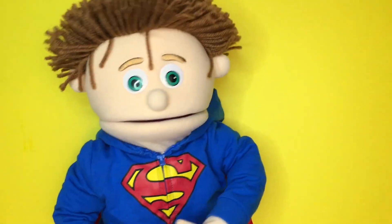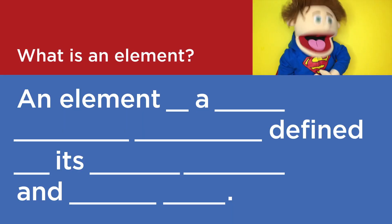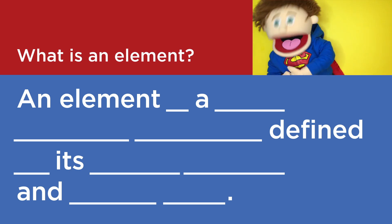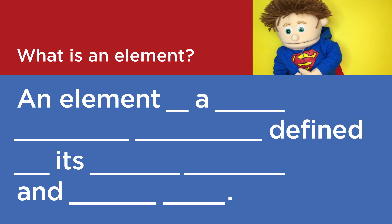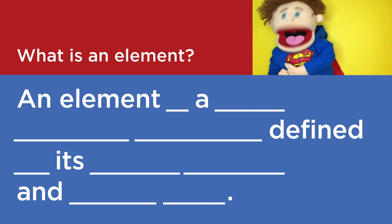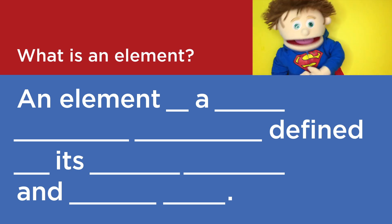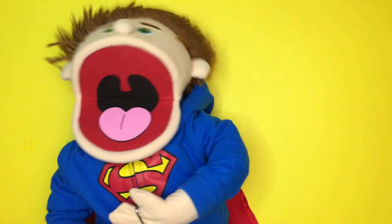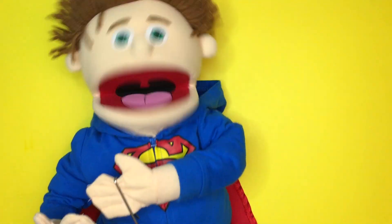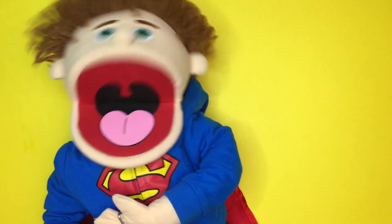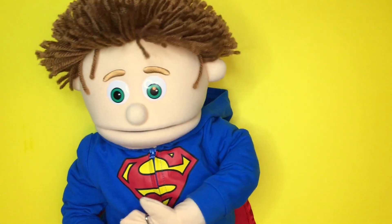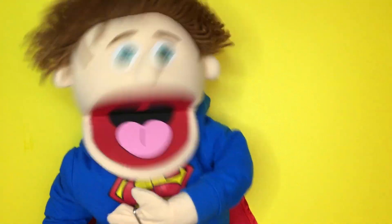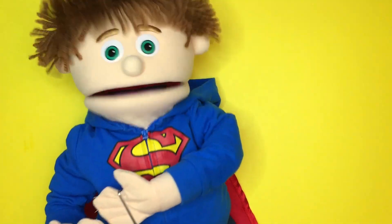Let's try that again. An element is a basic chemical substance defined by its atomic number and atomic mass. What is an element? An element is a basic chemical substance defined by its atomic number and atomic mass.